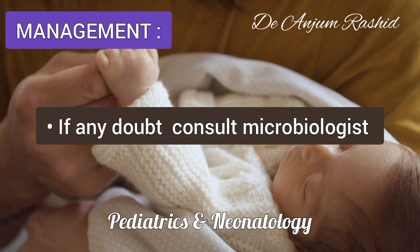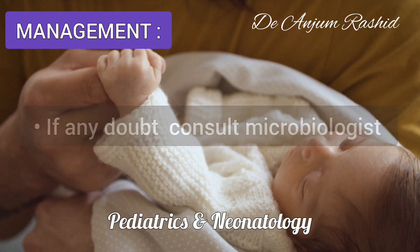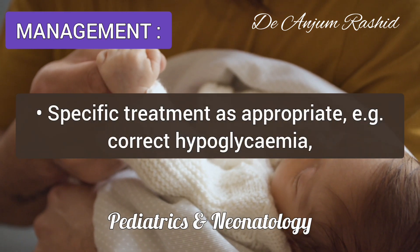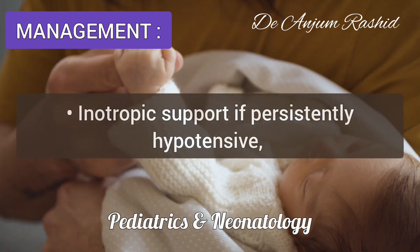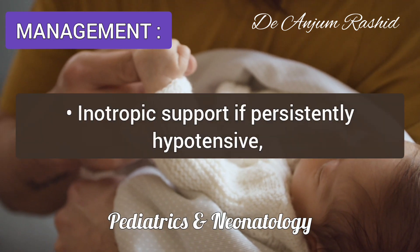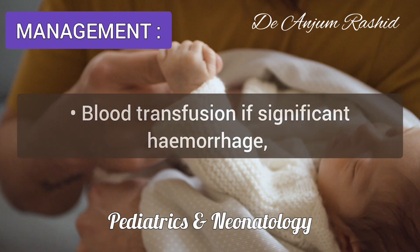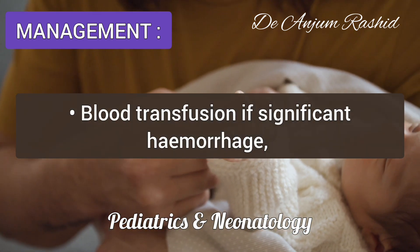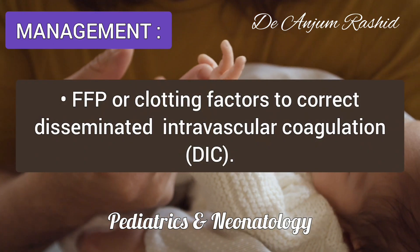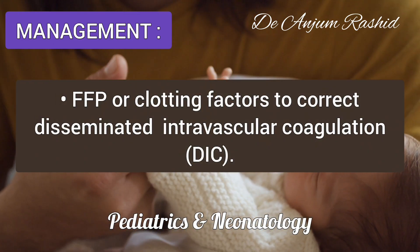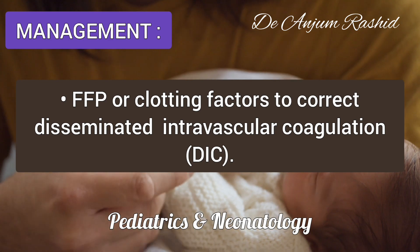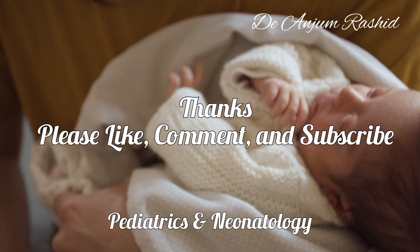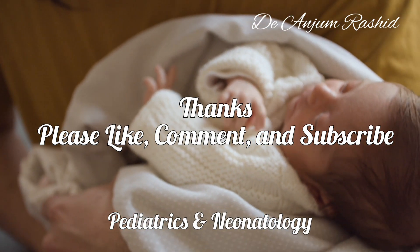If in any doubt, consult the microbiologist. Specific treatment should be given as appropriate — for example, correct hypoglycemia, give inotropic support if there is persistent hypotension, blood transfusion if there is significant hemorrhage, and fresh frozen plasma or clotting factors to correct disseminated intravascular coagulation. Thanks for watching — please like, share, comment, and subscribe for more informative videos.